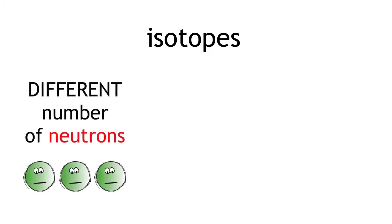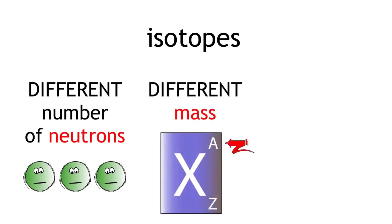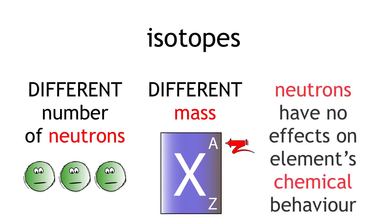Isotopes only differ in their number of neutrons and their mass. Their chemical properties are exactly the same because neutrons have no effect on an element's chemical behaviour. This is controlled by electrons which we will discuss in another video.